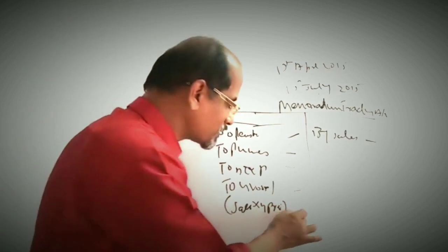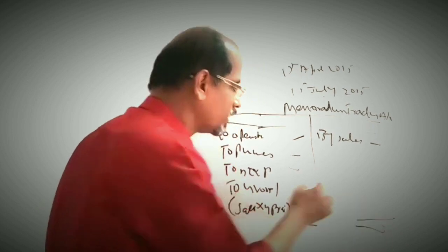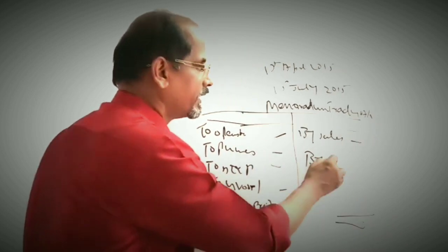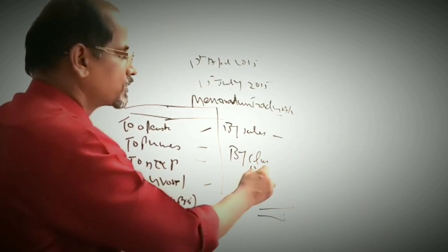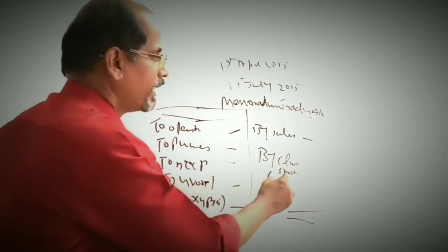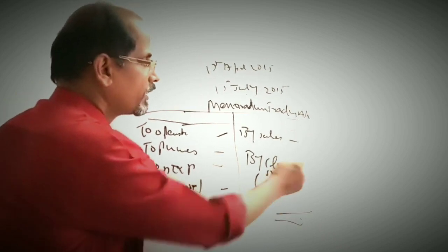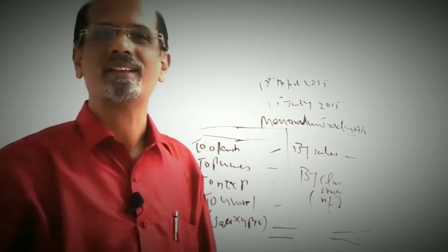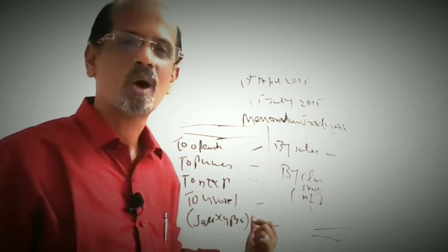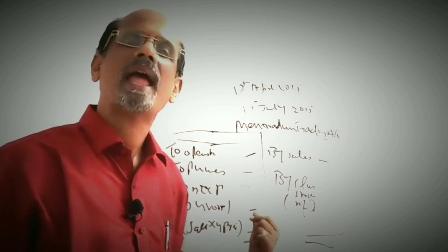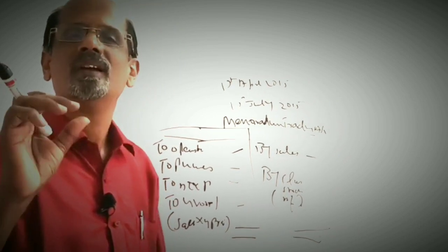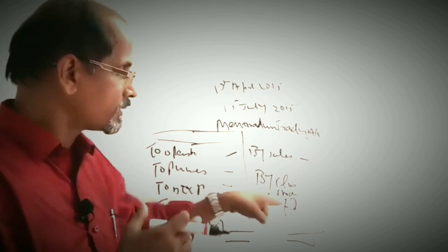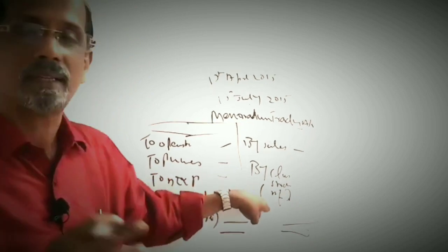Then you balance the account — the debit side will be more. You get the answer on the credit side, which is naturally the closing stock as the balancing figure. This is the stock at the date of fire, and this is how you calculate the closing stock to be submitted as part of the claim.